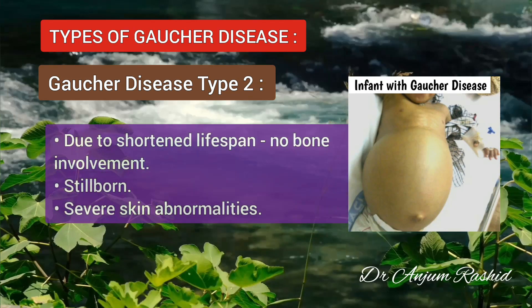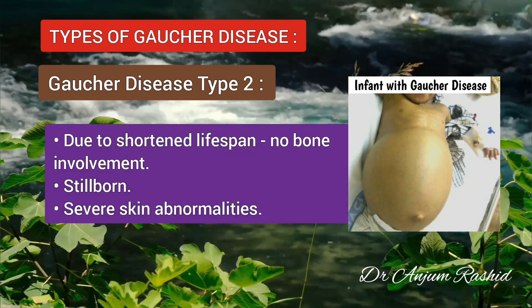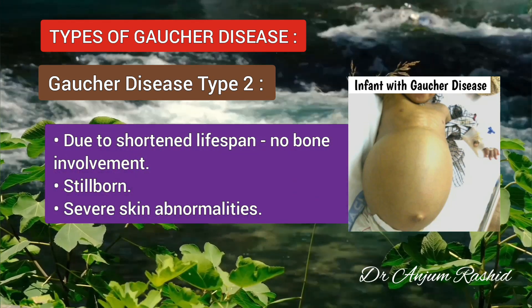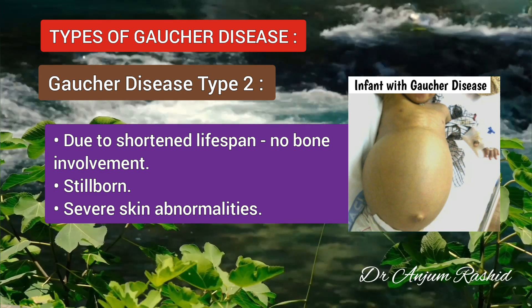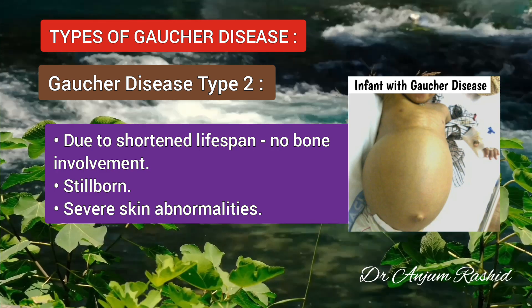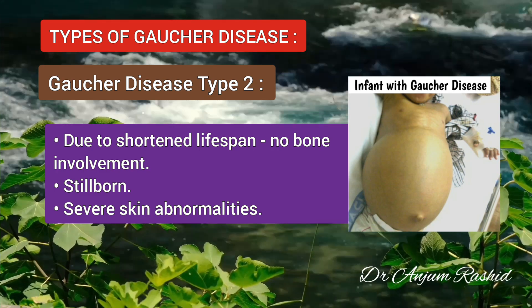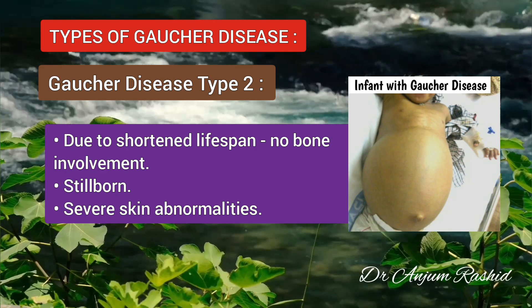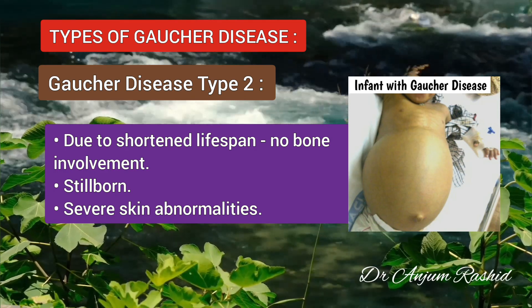Due to their shortened lifespan, babies with Gaucher disease type 2 do not survive long enough to develop other typical symptoms like bone involvement. Some can be stillborn or have severe skin abnormalities.